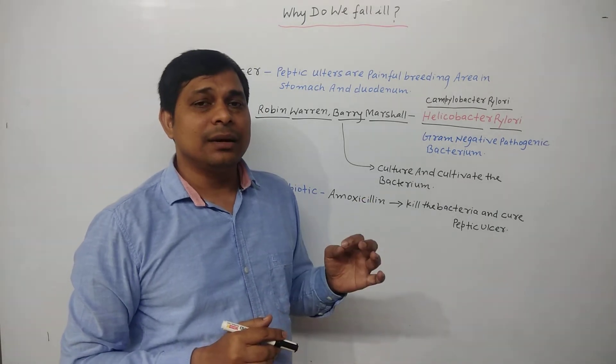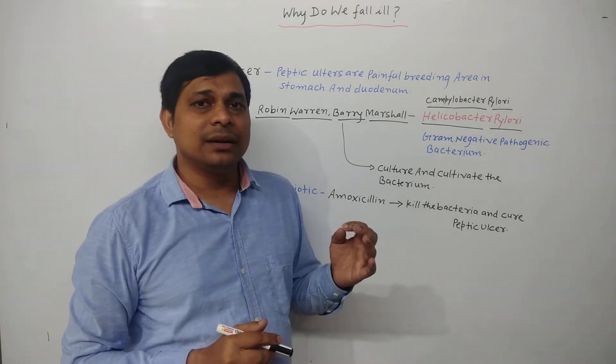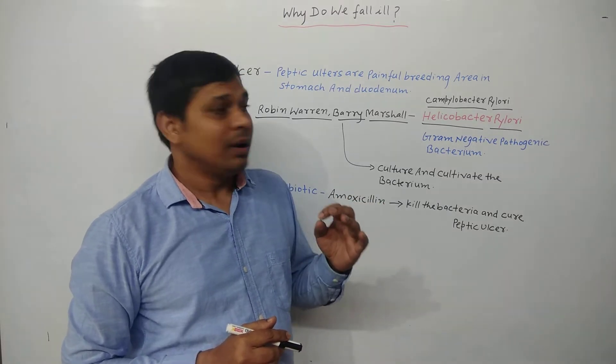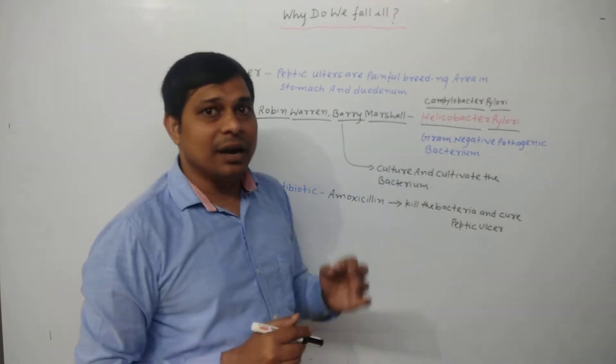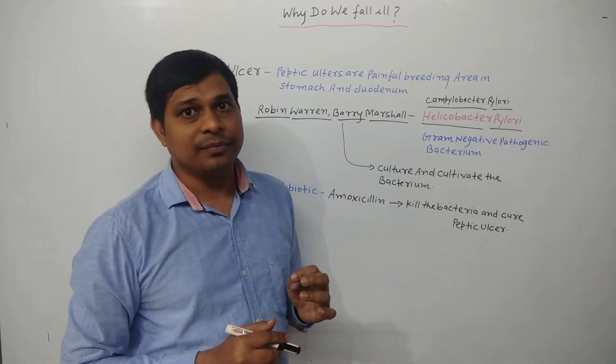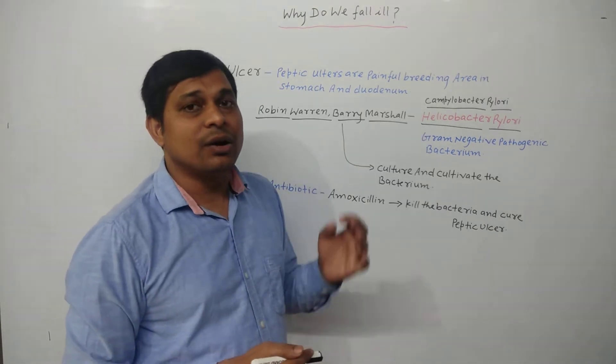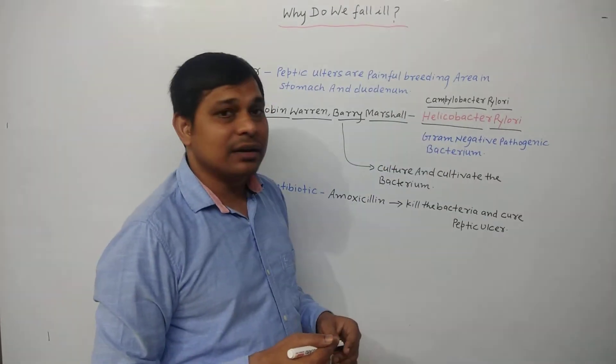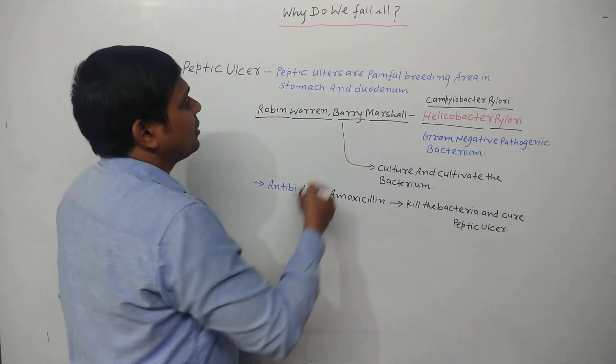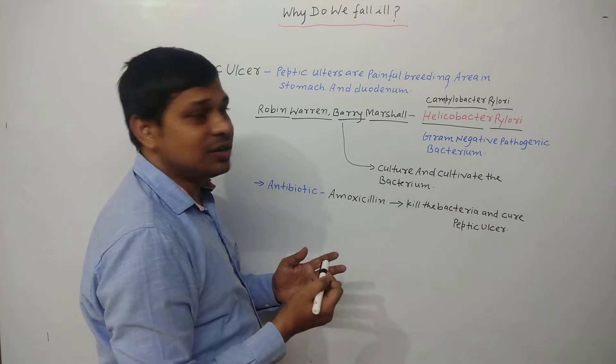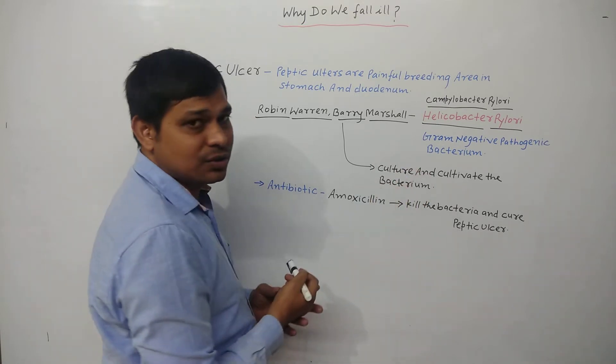There is inflammation and bleeding area in the stomach and duodenum, and this bacteria is present in this area. So they guessed that this disease, this peptic ulcer, is caused by Helicobacter pylori. Barry Marshall cultivated and cultured this bacterium from these sources.